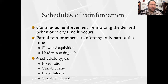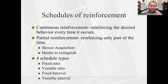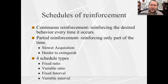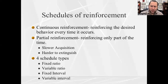We have something called partial reinforcement, which means not every desired behavior gets reinforced. You have to do the behavior a certain number of times, or a certain amount of time has to pass, before you're reinforced. With partial reinforcement, it's harder to learn the connection between behavior and consequence — learning is slower — but once learned, it's harder to forget.